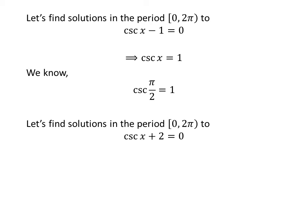Now let us find the solution to the equation cosecant of x plus 2 is equal to 0 in the period 0 to 2π. Taking 2 from the left hand side to the right hand side gives us cosecant of x is equal to minus 2. We know the value of cosecant of π/6 is 2.